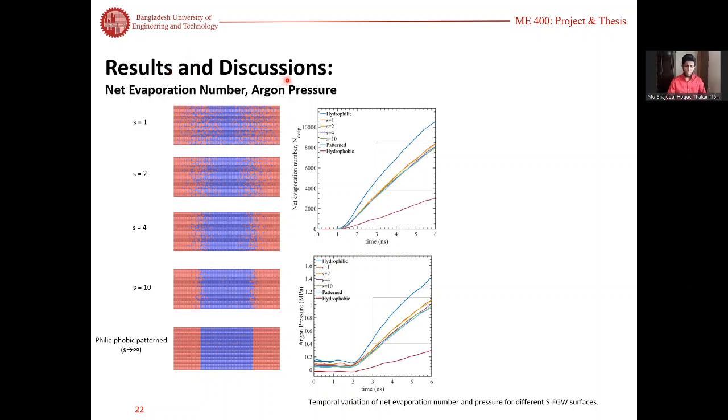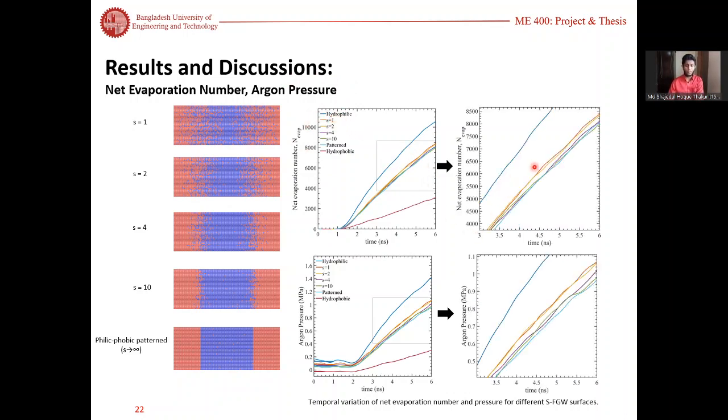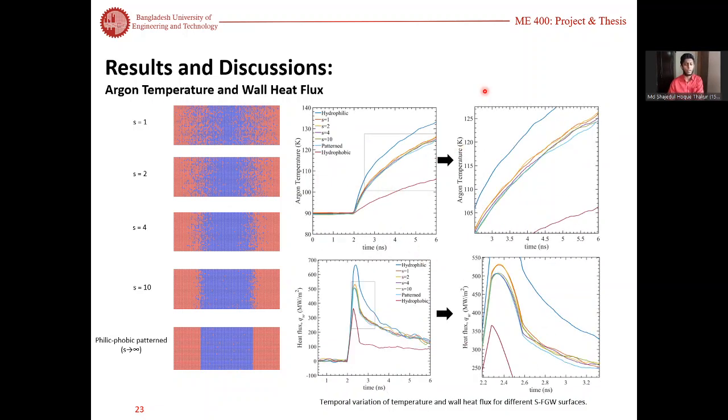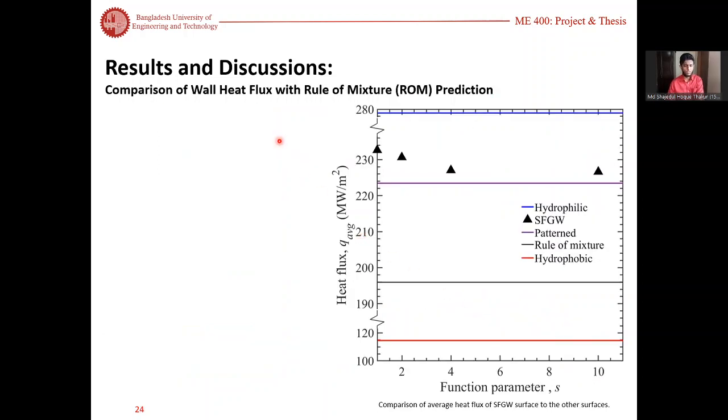If we look at the net evaporation number and the argon pressure, we see that for lower gradients at s equal to one, there is higher net evaporation number and higher argon pressure. The similar trend is seen for argon temperature and also wall heat flux.